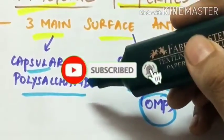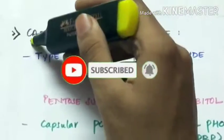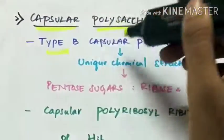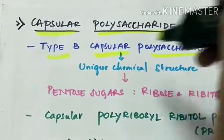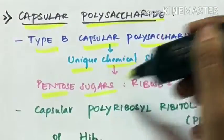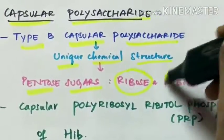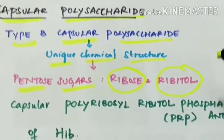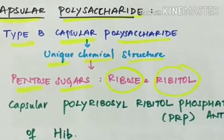We will see about the capsular polysaccharide in detail. The type B capsular polysaccharide has a unique chemical structure which is made up of pentosugars, ribose and ribitol, instead of hexosamines as in the other five serotypes.